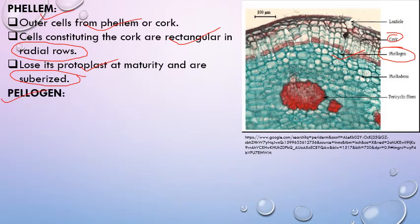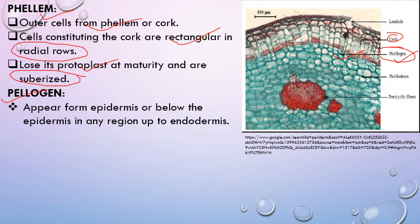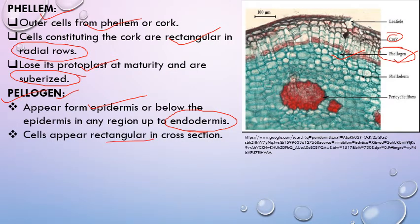Phellogen is the meristematic second lateral meristem, also called cork cambium. It appears from the epidermis or below the epidermis in any region up to the endodermis — so cork cambium can form from epidermis or any cortical region cells up to endodermis that revert back to meristematic tissue. These cells appear rectangular in cross section.